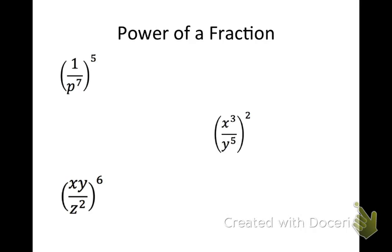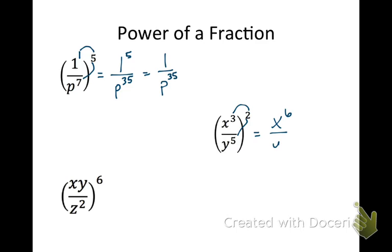Power of a fraction. For (1 over p to the 7th) to the 5th, put an exponent of 1 on the 1 in the numerator, then distribute the 5: 5 times 1 is 5 on top, 5 times 7 is 35 on the bottom. Since 1 to the 5th is always 1, the answer is 1 over p to the 35th. For the next one, (x to the 3rd over y to the 5th) squared — distribute the 2 to each exponent — giving x to the 6th over y to the 10th. We can't simplify further since x and y are different bases.